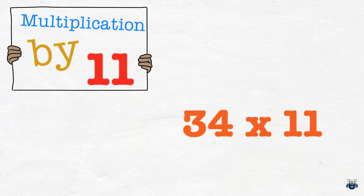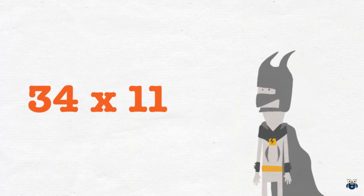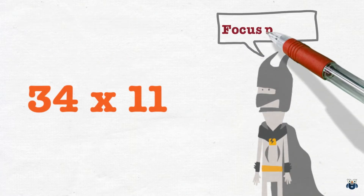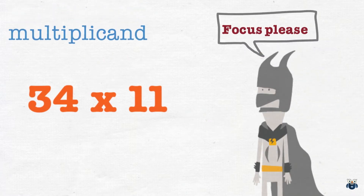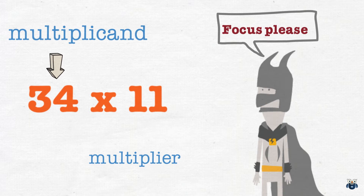I am going to use two terms regularly in this video, so let me quickly introduce them. Multiplicand and Multiplier. I will refer to the first number — 34 in this case — as the Multiplicand, and the second number — 11 in this case — will be referred to as the Multiplier.